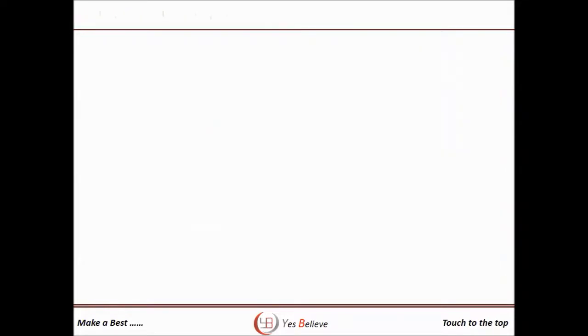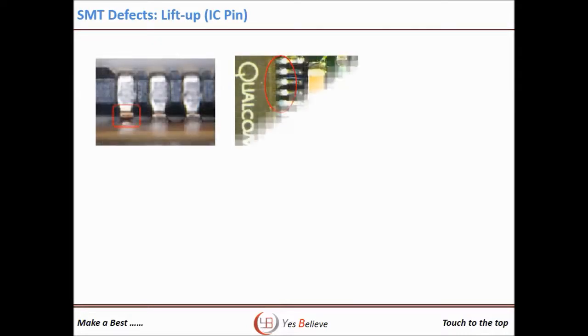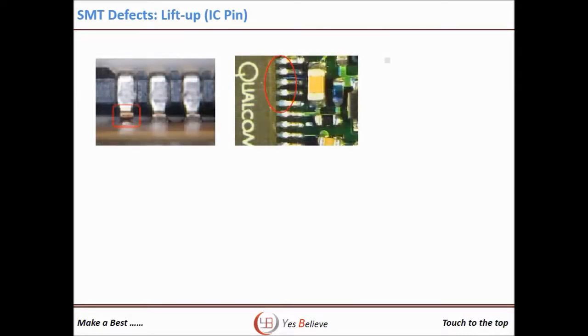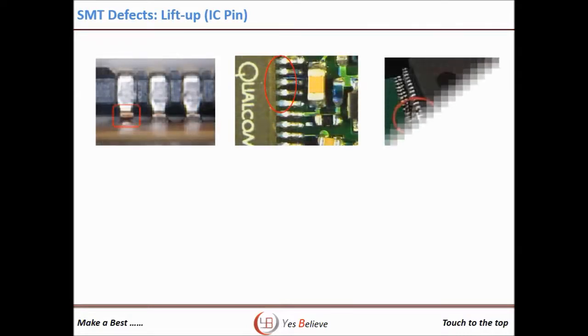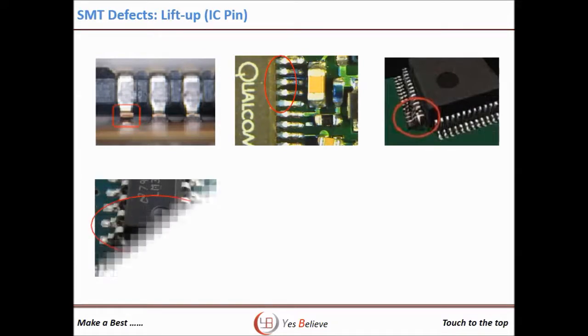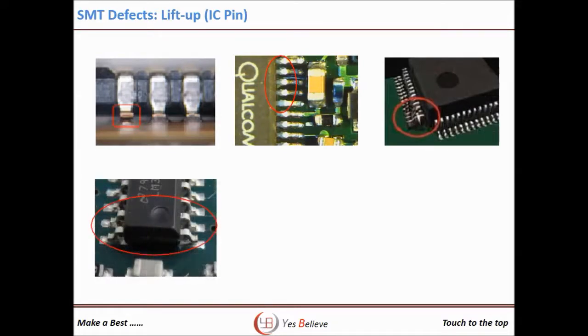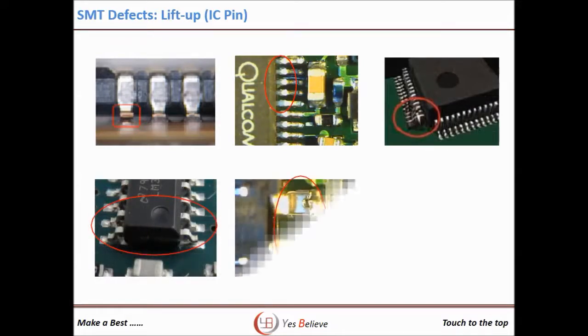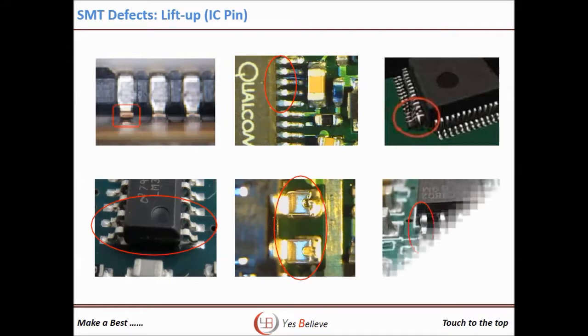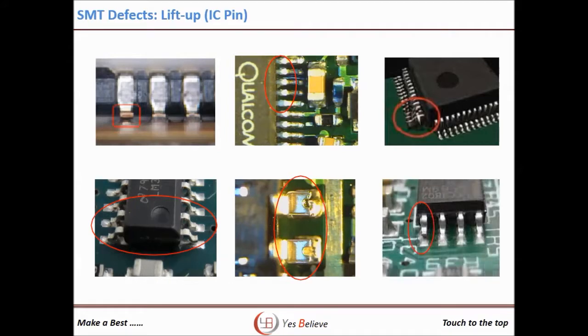The next defect is lift up, where the IC lead is not soldered with the PCB pad. The most common reason for this defect is a bent lead. When using loose components or drop components, the lead gets bent, which causes the lift up defect.